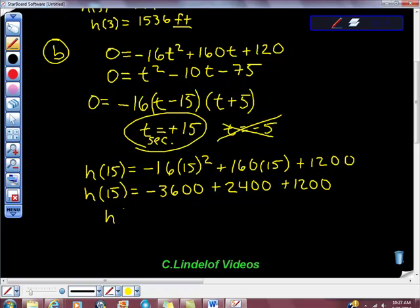So we have the height after the object's thrown at 15, the time of 15 seconds is, we have 2400 plus 1200, which is 3600, adding to -3600, which is 0. And that is exactly the height we wanted, was when it is at the ground or the height is at 0.